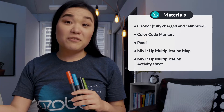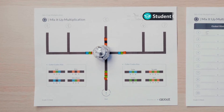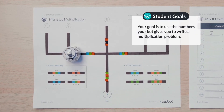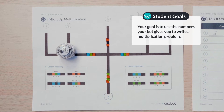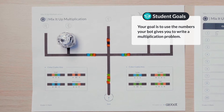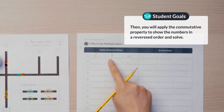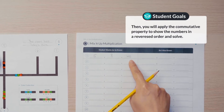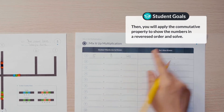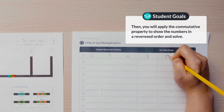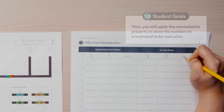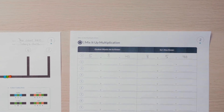Don't forget a pencil. After completing today's lesson, you will be able to write multiplication problems using the random numbers that the Ozobot gives you, and you'll be able to apply the commutative property to show that the numbers in reverse order still gives you the same product or answer.